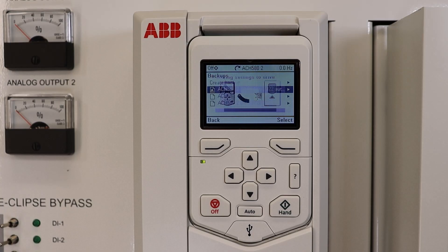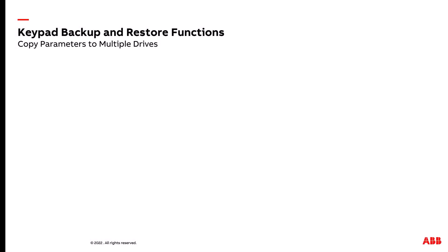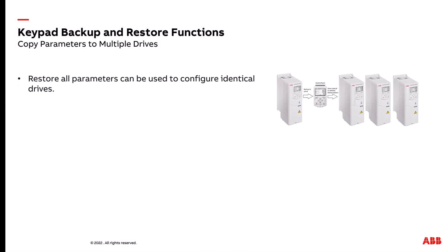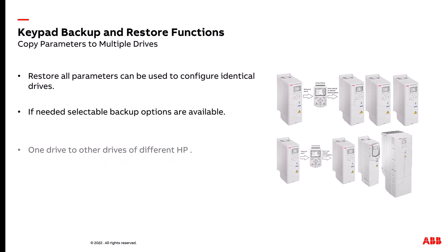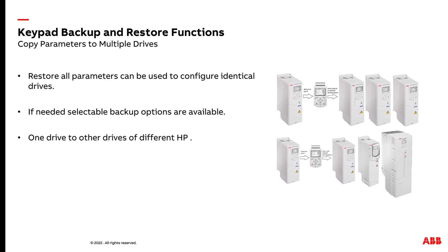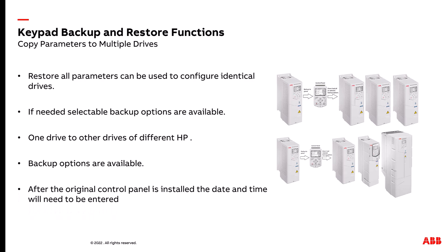This is all part of the ABB ACH 580 drive and the 580 series. Let's look at copying parameters to multiple drives. You can restore all the parameters from one drive to multiple identical drives. If the configurations are identical, you can back up from one drive that's set up and restore all the information to each individual drive. If needed, you can select backup options for individual parts of the parameter groups. One drive to another drive of different horsepower — backup options are available. After the original control panel is installed, the date and time will need to be entered on the original control panel.